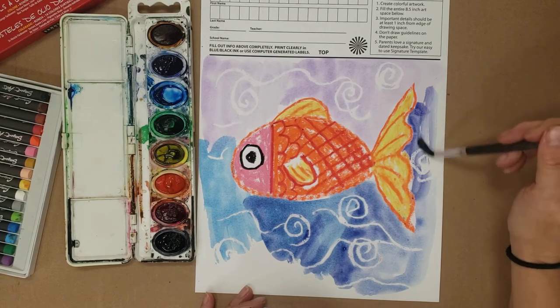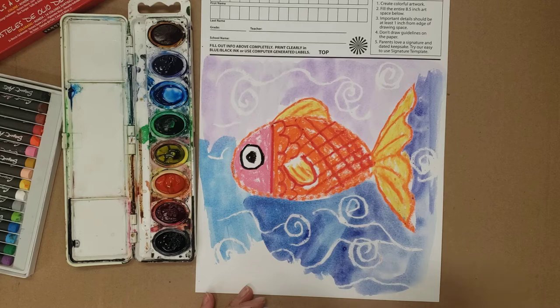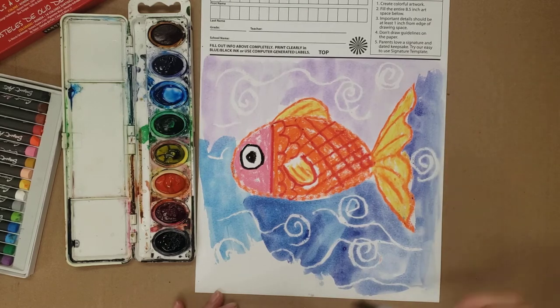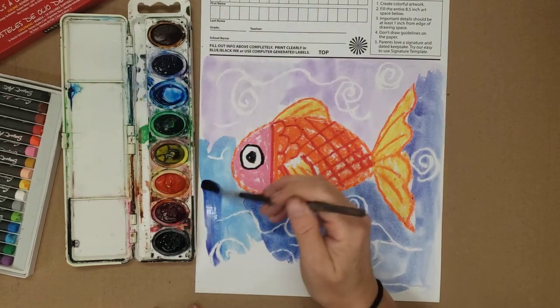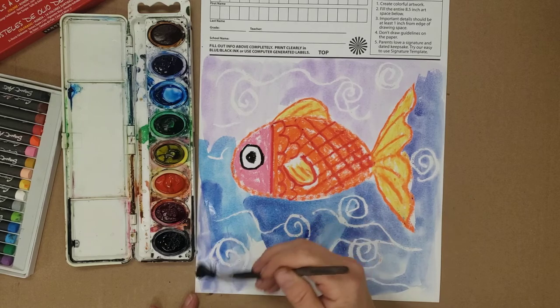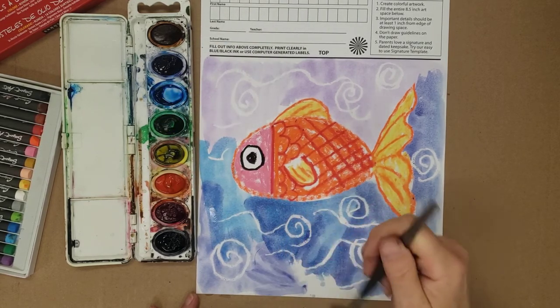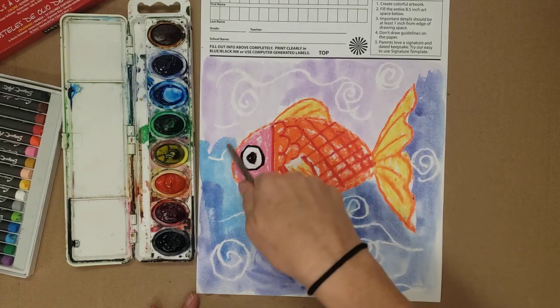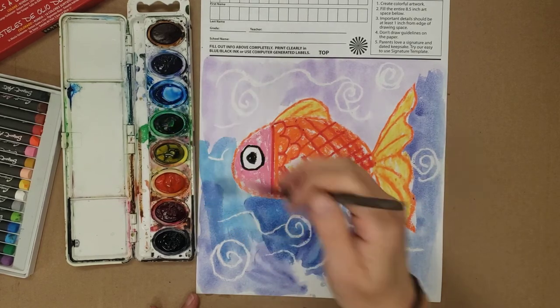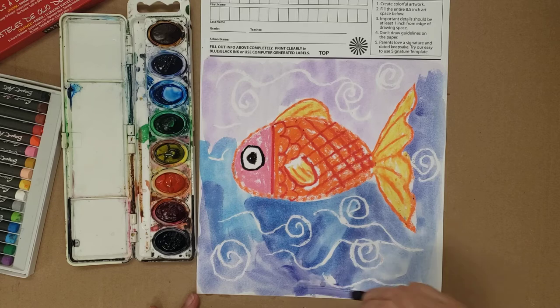Once you are all done you let it dry, and then if you want to, you don't have to, but if you want to write your name somewhere around your fish.